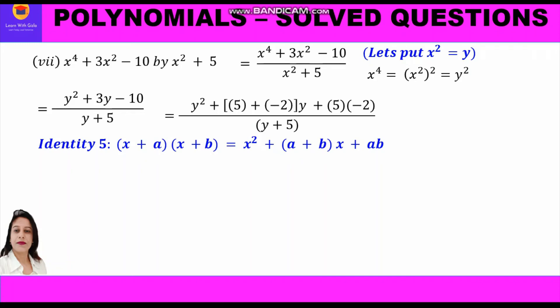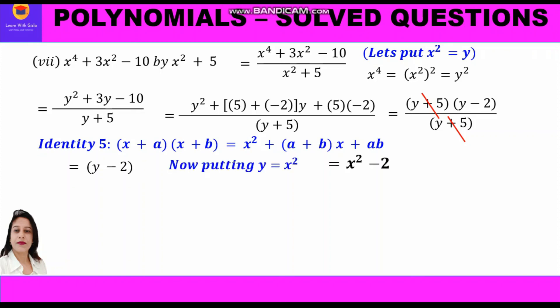We know that 5 minus 2 is 3 and 5 times minus 2 is minus 10. So we write: y² + (5 + −2)y + (5 × −2) upon (y+5), where a is 5 and b is minus 2. The two factors are (y+5)(y−2) upon (y+5). Now (y+5) cancels and we are left with (y−2). Replacing y back with x², we get the answer x squared minus 2.